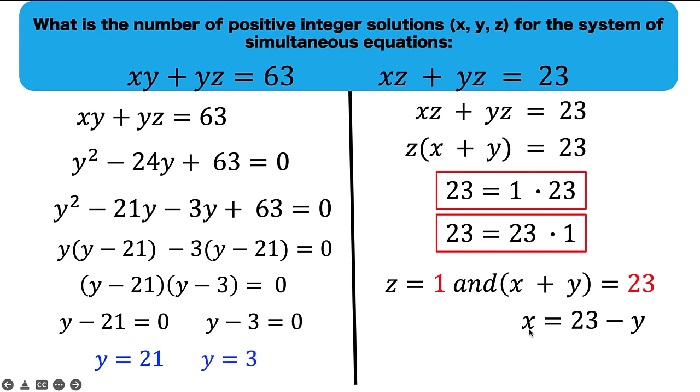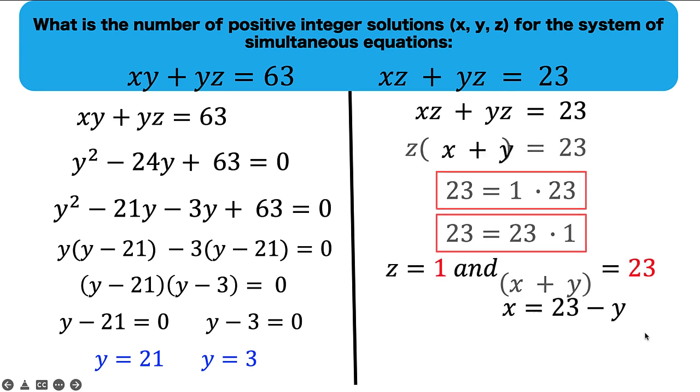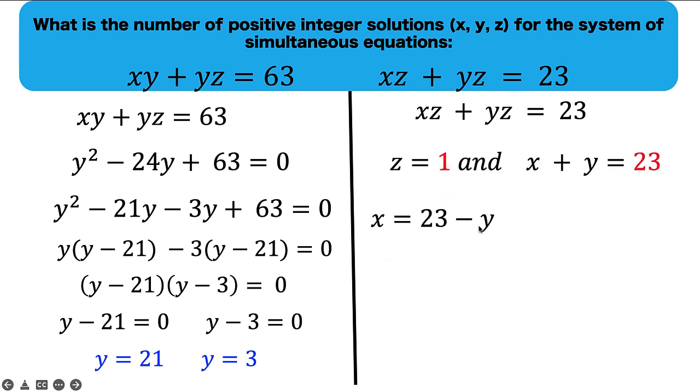And then let's go back to our equation for the value of x. x is equal to 23 minus y. And knowing that y is equal to 21, then x is 23 minus 21, or x equals 2. And knowing that y equals 3, then we have x equals 23 minus 3, which is this value. So x is equal to 20.